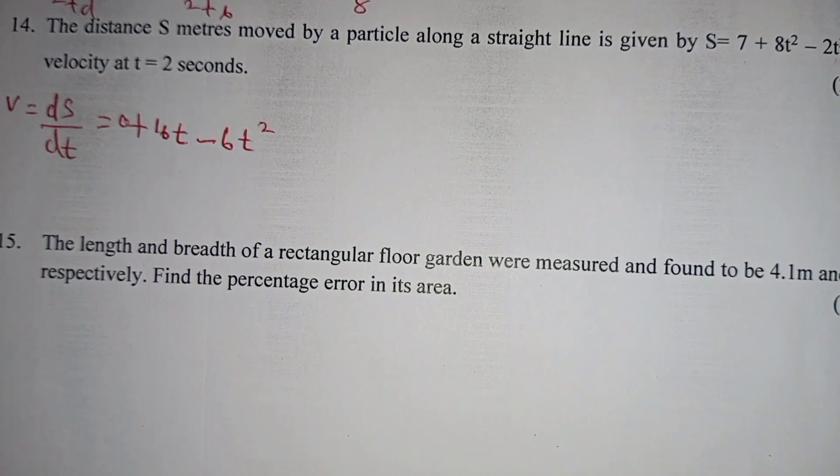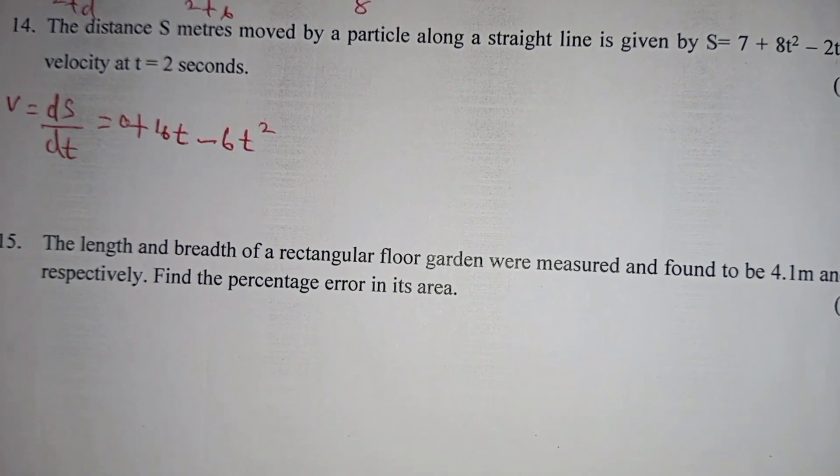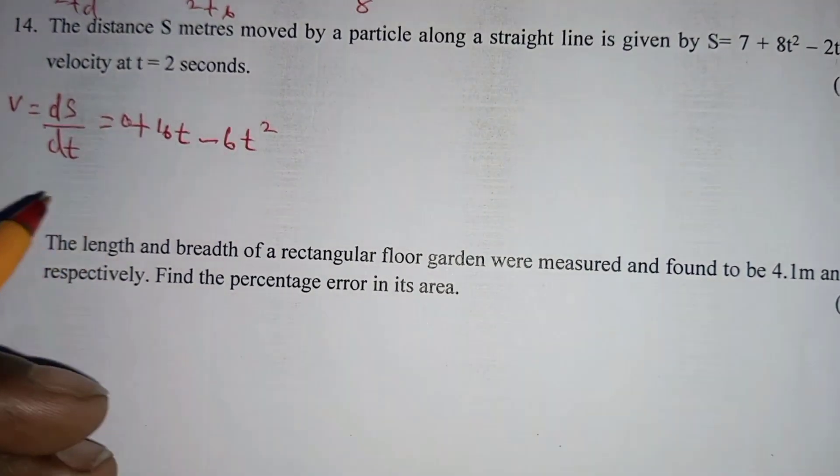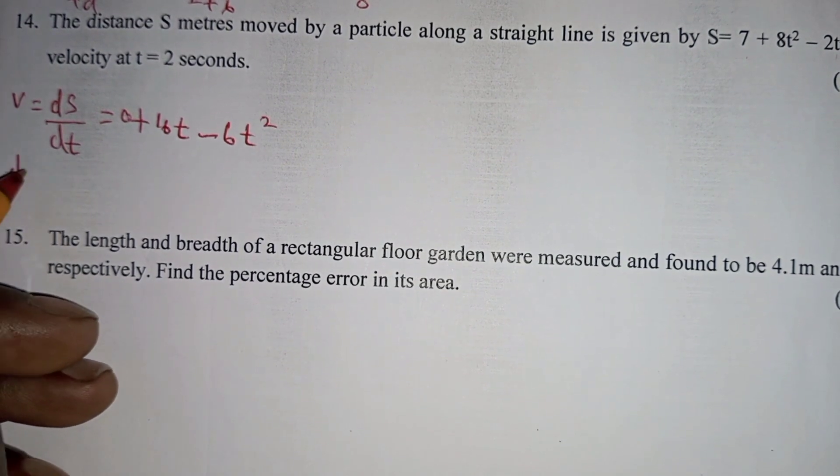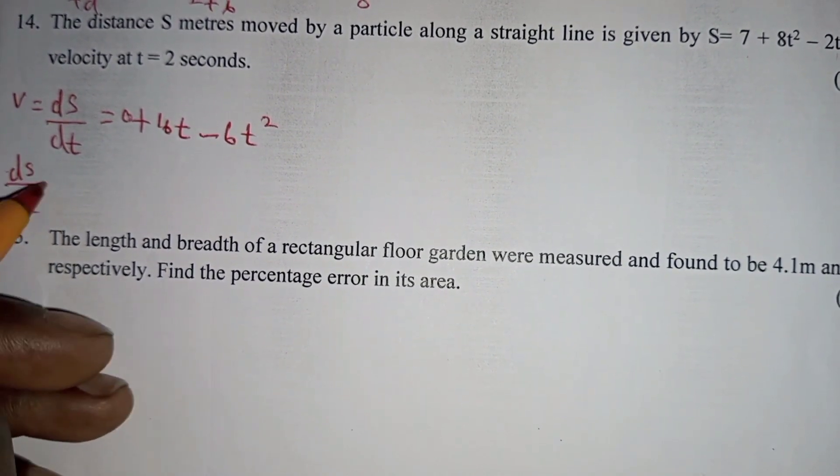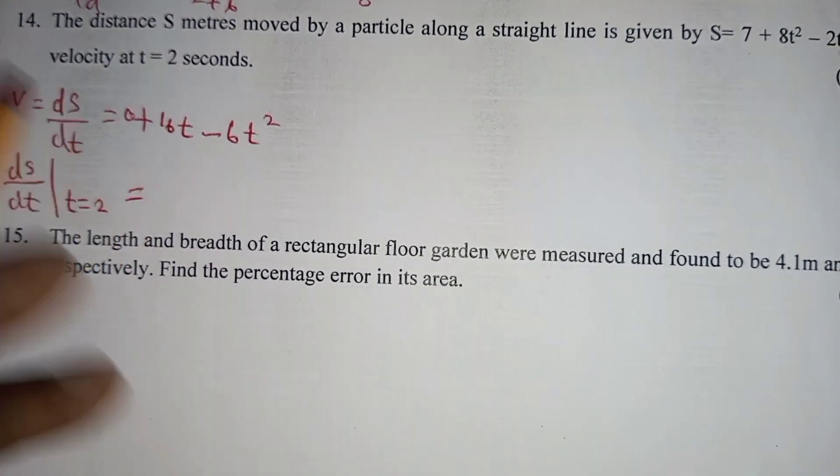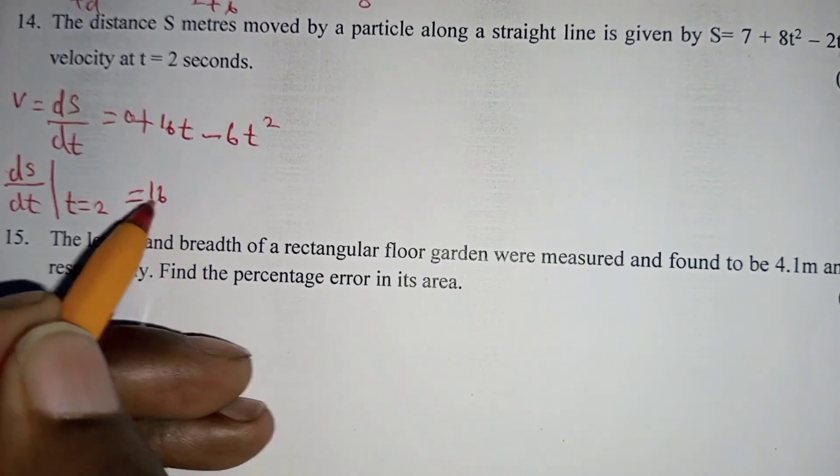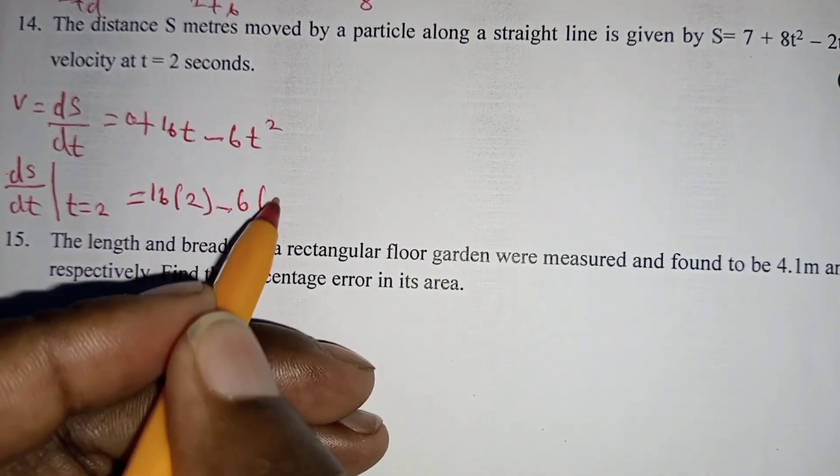And we are going to study together in this simple method step. Now, the question requires you to find velocity at ds over dt at t equals 2. You come here and substitute the value of t. You have 16 into bracket 2 minus 6 into bracket 2 squared.